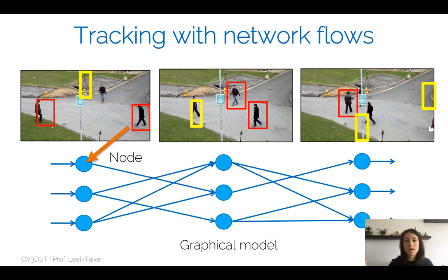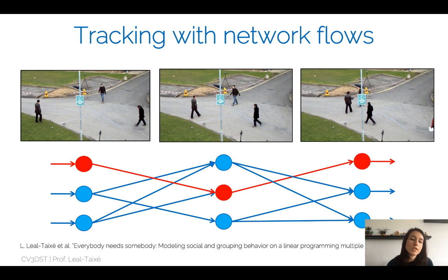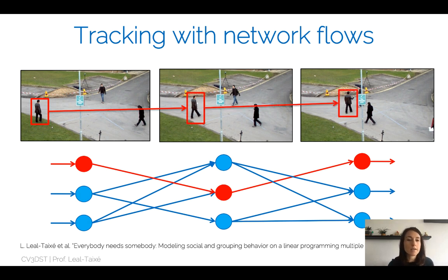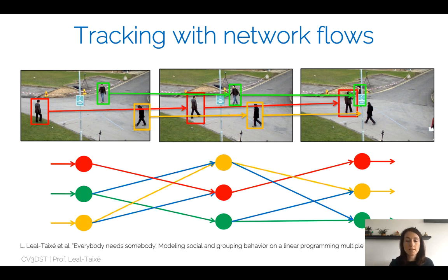The tracking problem then becomes finding the connections in this graph that identify a trajectory. For example, connecting the red nodes with active edges recovers the trajectory of one pedestrian — each node represents a detection. When I connect two nodes with a red edge, I'm saying these two nodes represent the same person. Finding all pedestrians in the scene means finding all paths in the graphical model.